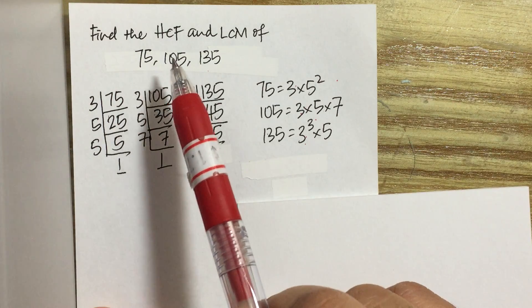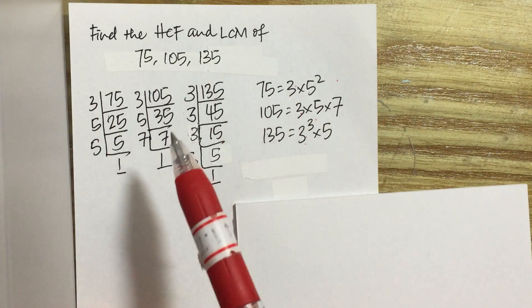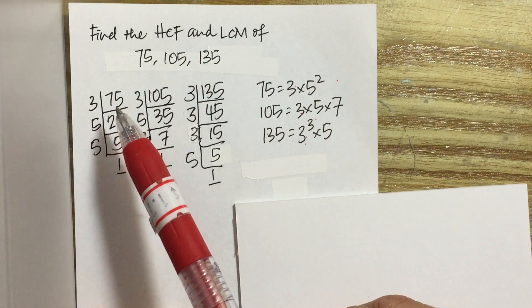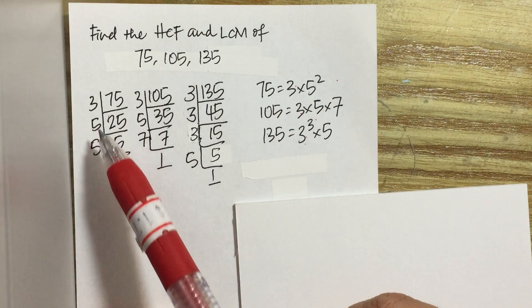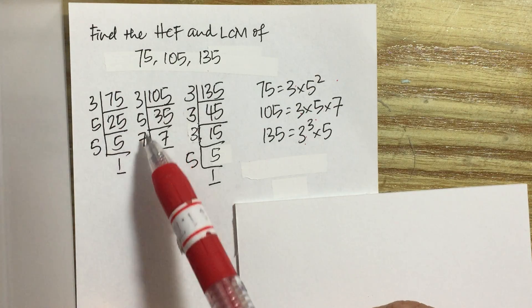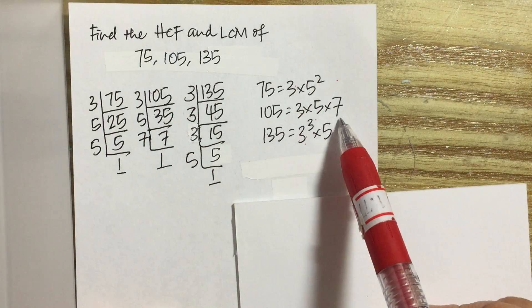To find the highest common factor and lowest common multiple of the three numbers, first we will use repeated division to help us find the prime factors that make up each of these numbers. Then we express them in index notation.